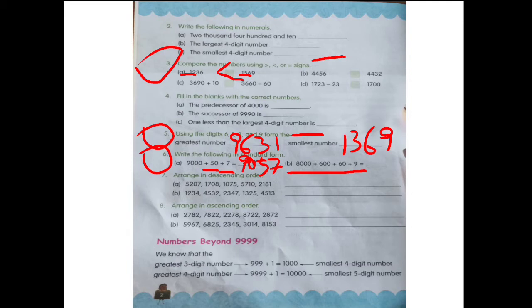The answer is 9,057. Now we will move to question number 4, which you have to write in your notebook. You have to write parts A, B, and C.